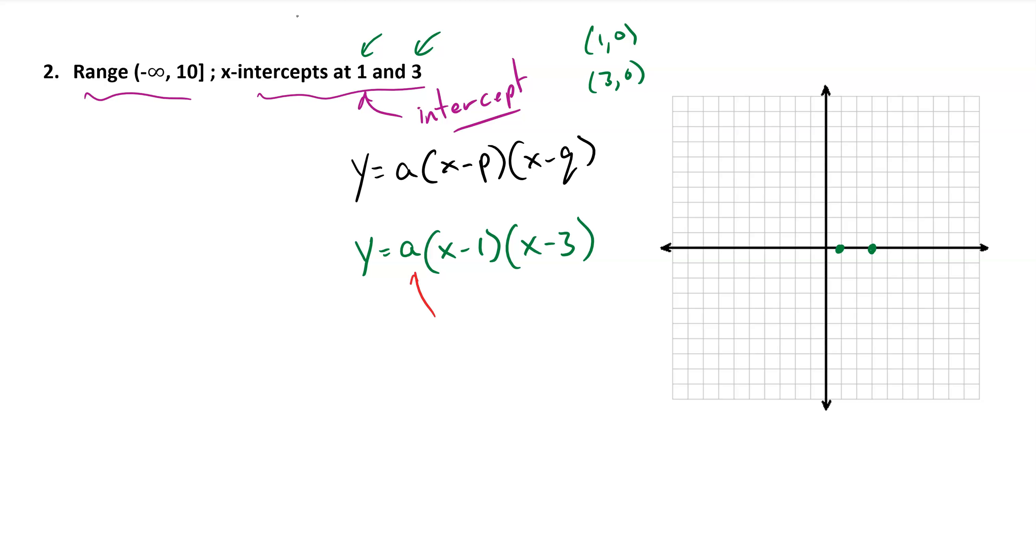So we have this sort of second step of the process. I need to figure out what a equals. Well, that's where this other bit of information comes in. The range goes from negative infinity to 10. Well, you might recall that this maximum value of the range is going to be the y-coordinate of the vertex, and so the vertex has to be something with a 10 in the y-coordinate position, and that something, of course, is going to be the x value of the axis of symmetry, which is right between the two x-intercepts.